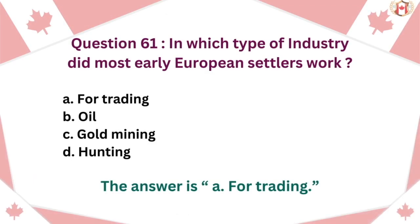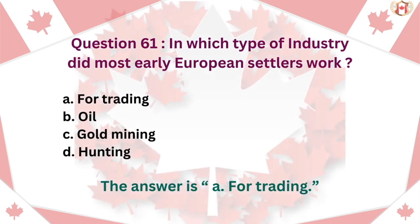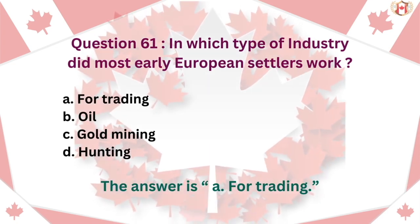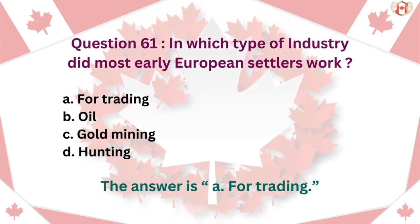Question 61: In which type of industry did most early European settlers work? A. Fur trading, B. Oil, C. Gold mining, D. Hunting. The answer is A. Fur trading.